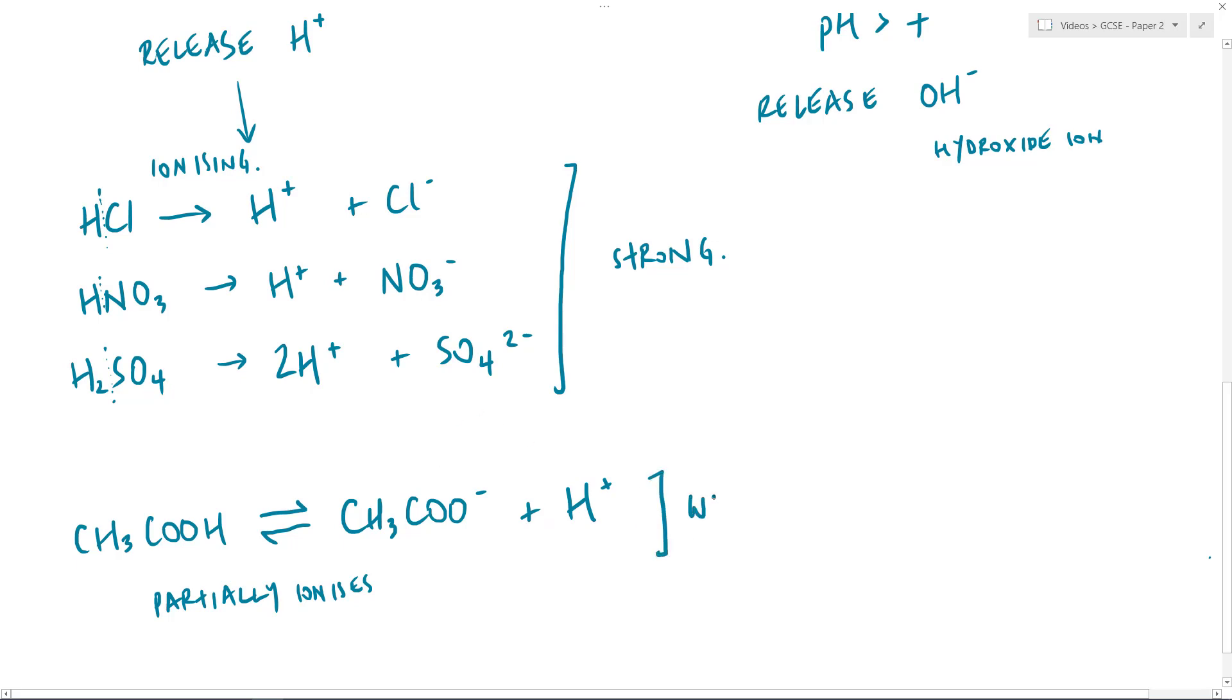The simple way to understand whether the ionization occurring is strong or weak is to look for the arrow. If we have an arrow which is just pointing one way, we know it is a strong acid. The same is true of alkalis as well. We know it's weak, however, if it has the double-headed reversible arrow. That is, it is weak.